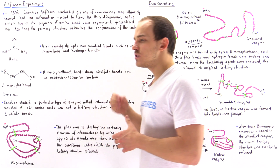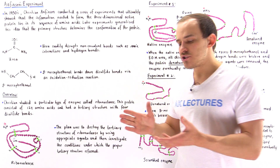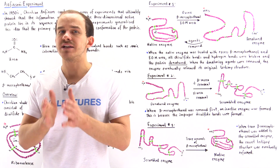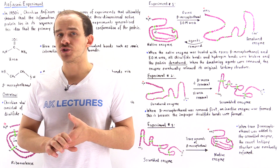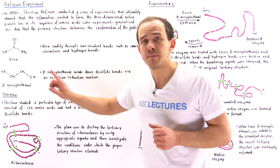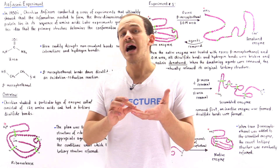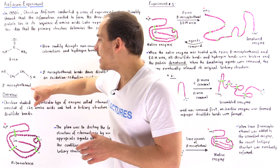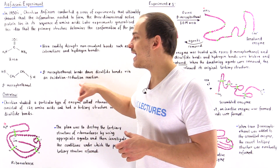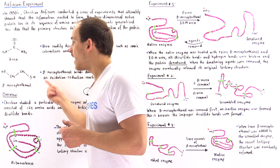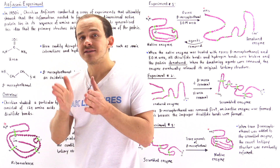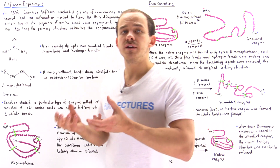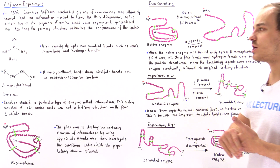Urea is used to break down the non-covalent bonds, such as hydrogen bonds and ionic bonds, that hold together the secondary structure of the protein as well as parts of the tertiary structure. Beta-mercaptoethanol is used to break down the covalent disulfide bonds that hold the tertiary structure together. Beta-mercaptoethanol works via an oxidation-reduction reaction — it is itself oxidized, and it reduces and breaks the disulfide bonds, breaking the cysteine units into two individual cysteine amino acids.